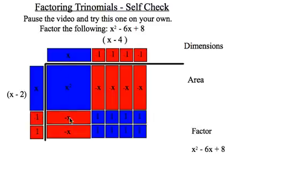Negative 1 times x, negative x. That works. And negative 1 times negative 1 is positive 1. I seem to have found the winning dimensions.